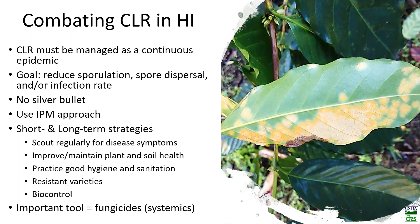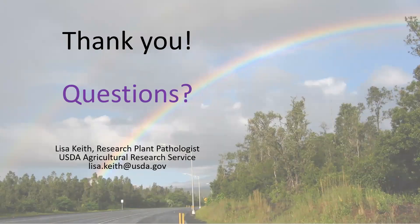An integrated pest management approach with both long-term and short-term strategies is essential. Fungicides — copper fungicides and biologicals — are important tools for killing spores on the surface and preventing germination. But once infection occurs and the fungus gets inside the leaf, systemics will be absolutely necessary to knock out this inoculum source that survives within the tissue. Thank you very much — I'm happy to answer any questions, or please email me at lisa.keith@usda.gov.